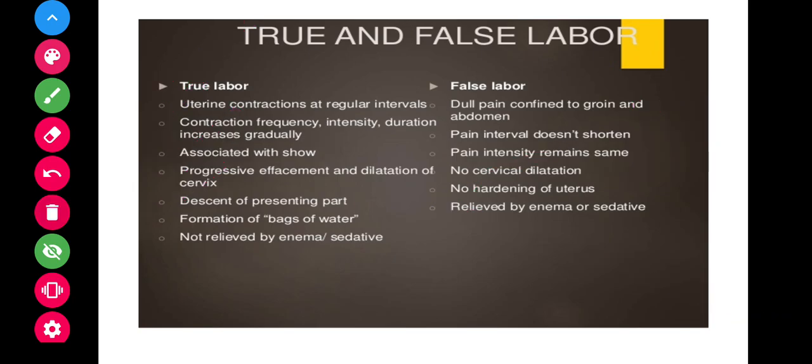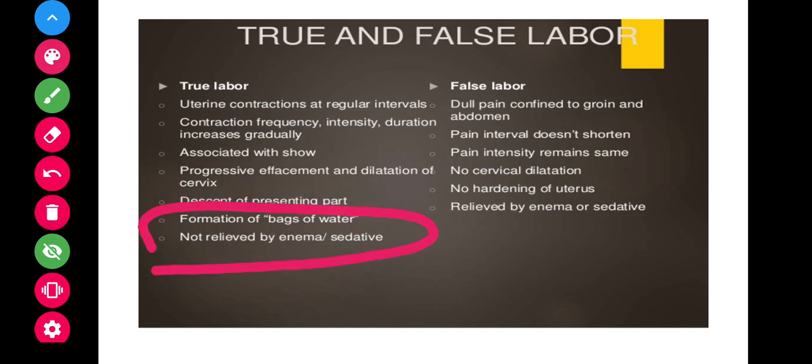In true labor, there is hardening of the uterus and formation of a bag of waters — the amniotic membranes descend and can be felt through the vagina. When enema or sedatives are given in true labor, the pain is not relieved. However, in false labor, pain is relieved by enema and sedatives. This is the key difference between true and false labor.